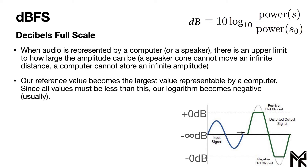Think about what this means in terms of dB. You're taking 10 times the log base 10 of a ratio that's generally going to be less than one, because the amplitude of your signal is less than the maximum value. If it's always at the maximum value, the ratio is one and log base 10 of one is zero. If it's smaller, you're taking the log of a number less than one, which gives a negative number — that's why all of your faders in your digital audio workstation are actually in negative dB.